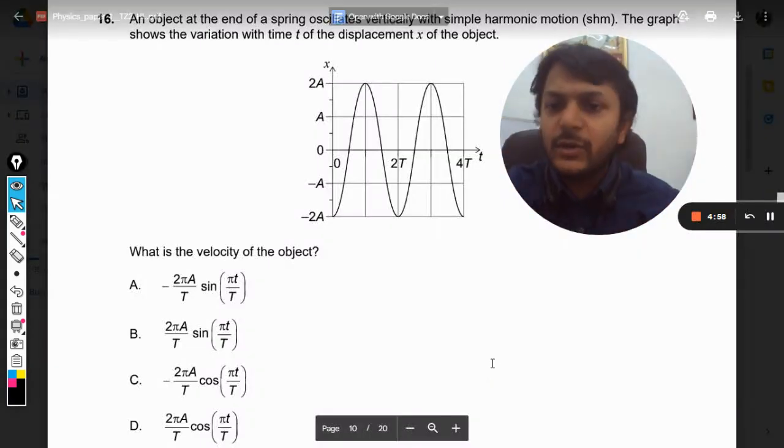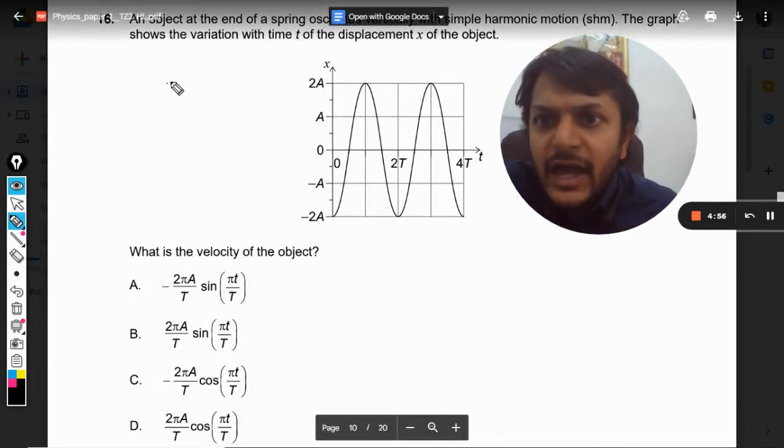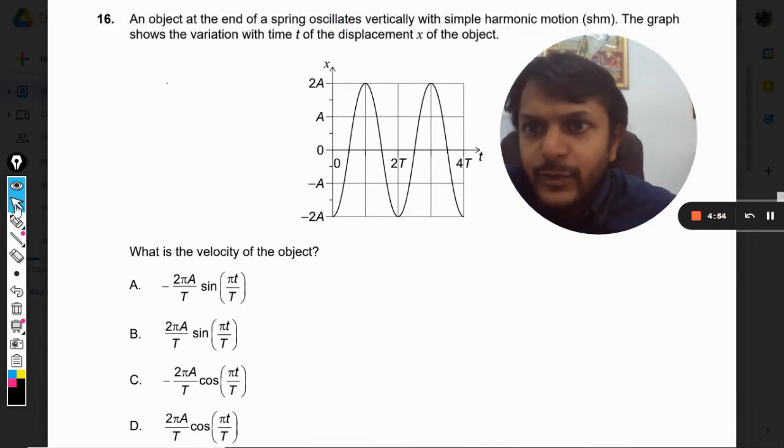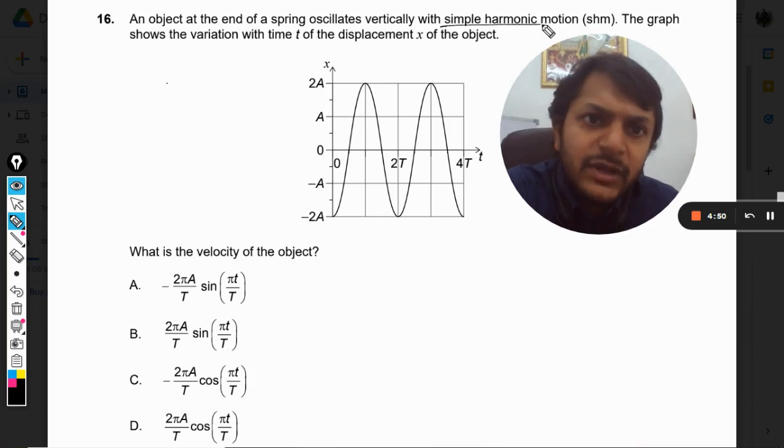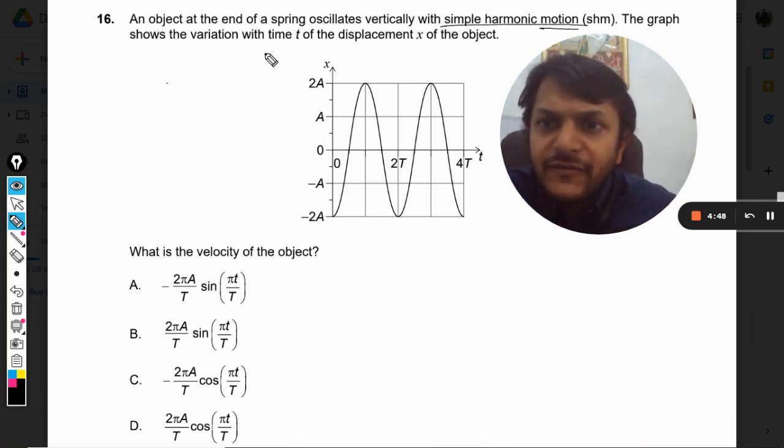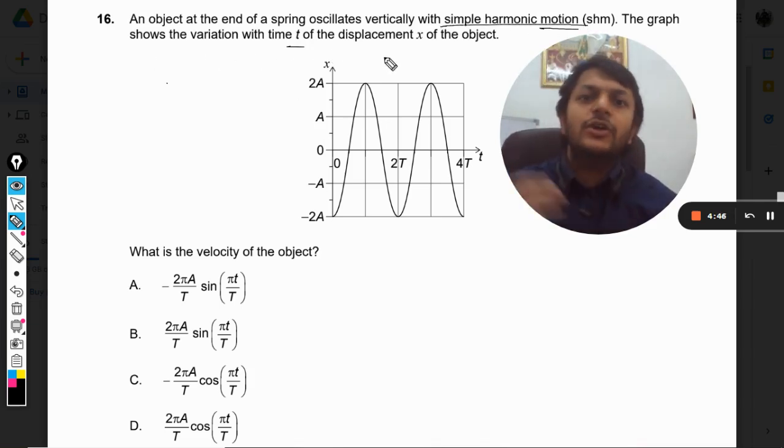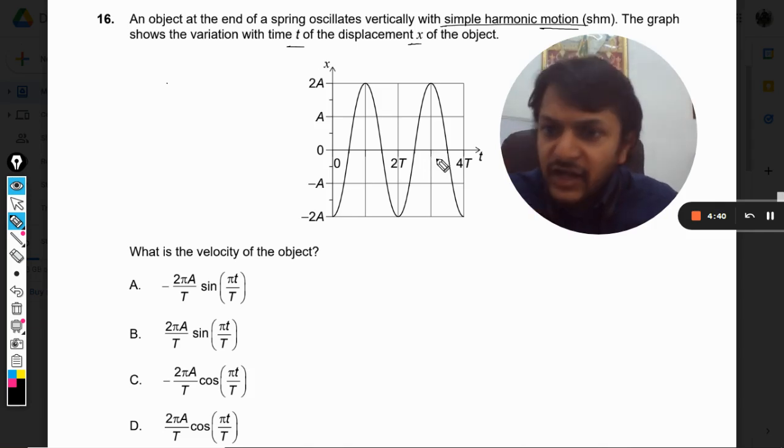Okay dear students, let us see what is in this question. An object at the end of a spring oscillates vertically with simple harmonic motion. The graph shows the variation with time t of the displacement x of the object. This is an SHM motion and the graph is also given. What is the velocity of the object?